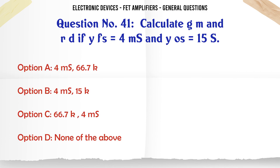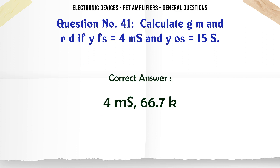Calculate GM and RD for YFS = 4mS and YOS = 15µS. A. 4mS, 66.7KΩ. B. 4mS, 15KΩ. C. 66.7KΩ, 4mS. D. None of the above. The correct answer is 4mS, 66.7KΩ.